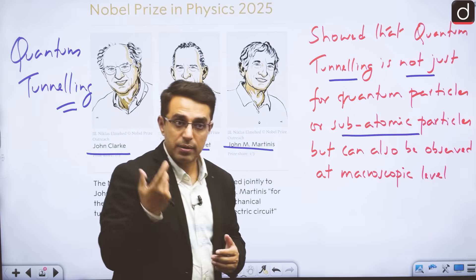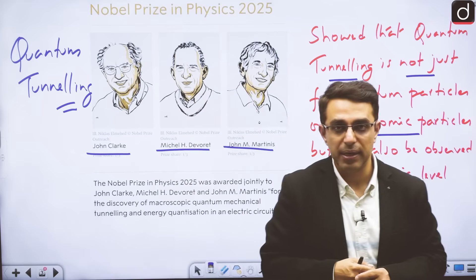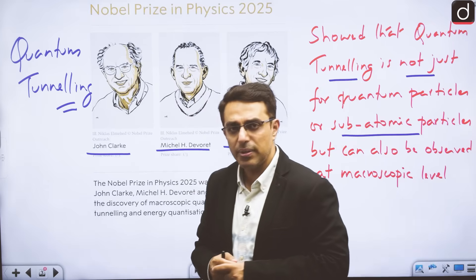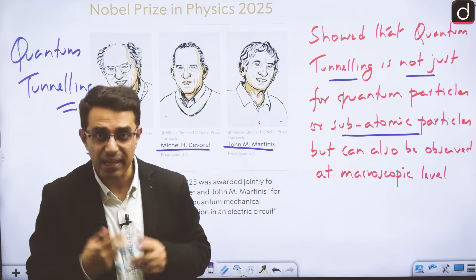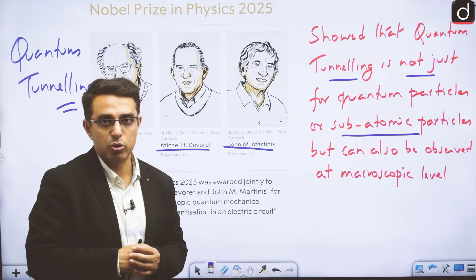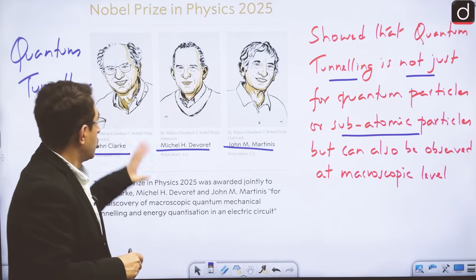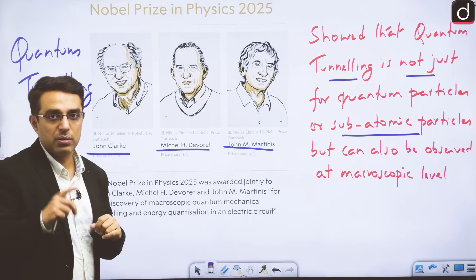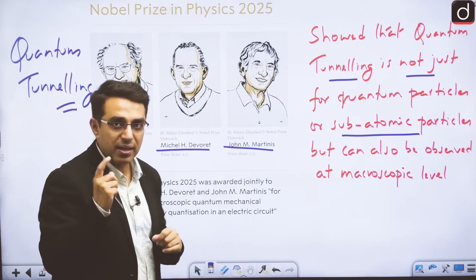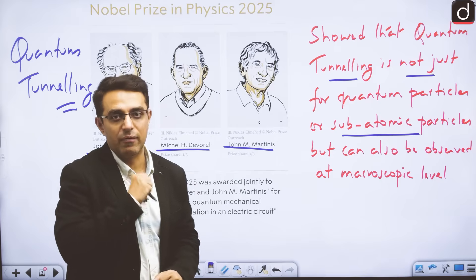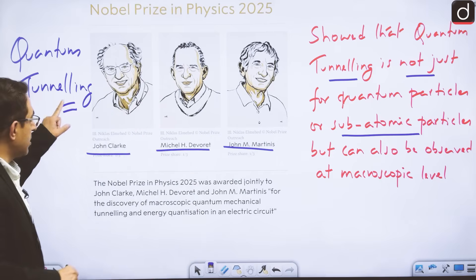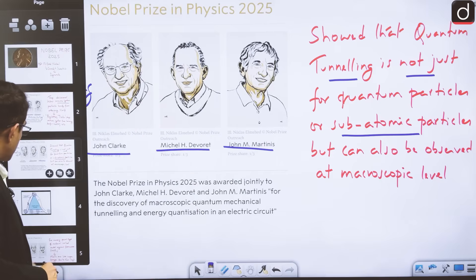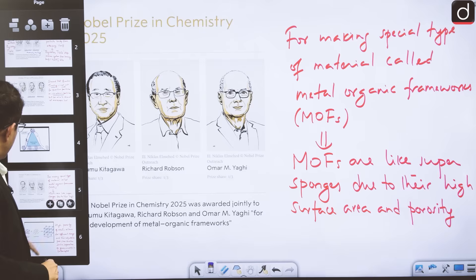This was possible in the case of quantum or subatomic particles. This year's Nobel Prize in physics has been given because the scientists have been able to show that quantum tunneling is not just for quantum particles or subatomic particles, but it can also be observed at macroscopic level under certain conditions. The implication or application is to make quantum computers. It has a great application in making of quantum computers. We need to remember that Nobel Prize in physics has been given for the discovery of quantum tunneling at macroscopic level.